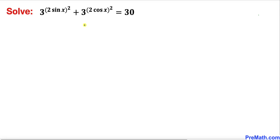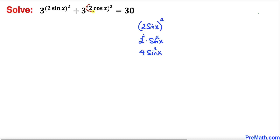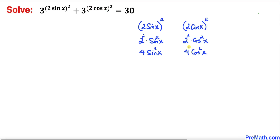Let's get started with the solution. Let's focus on this exponent (2 sin x)². This can be simplified to 2² times sin²x, and since 2² equals 4, we get 4 sin²x. Similarly, the exponent (2 cos x)² simplifies to 4 cos²x.